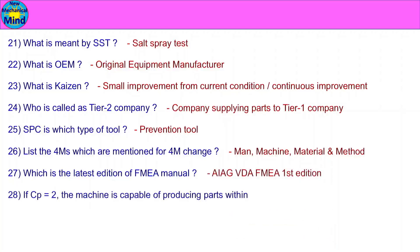If CP is equal to 2, the machine is capable of producing parts within 50% of tolerance. This means the machine will produce parts using only 50% of the available tolerance.